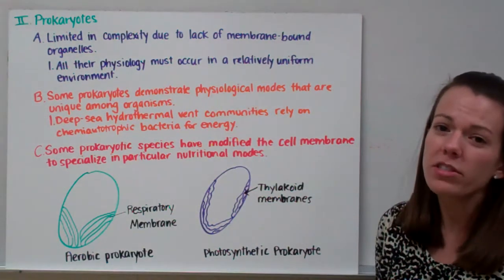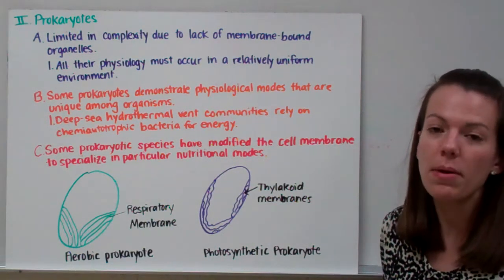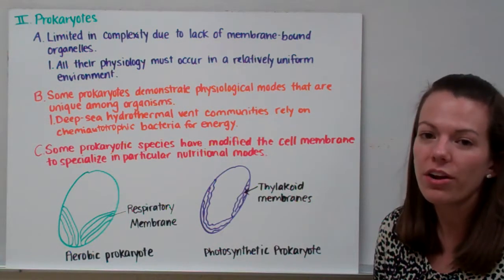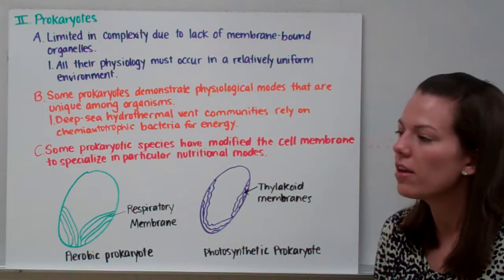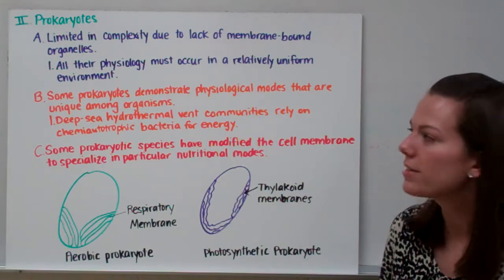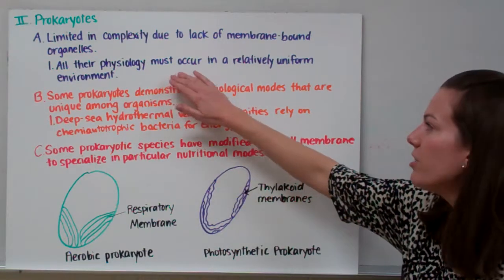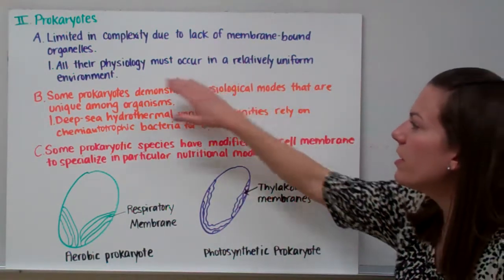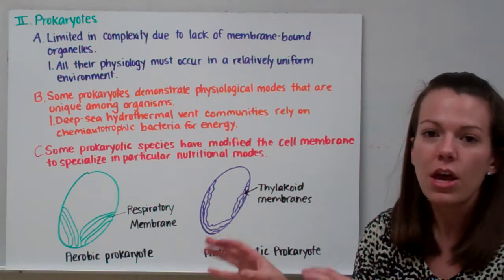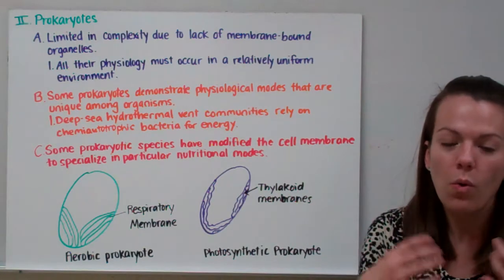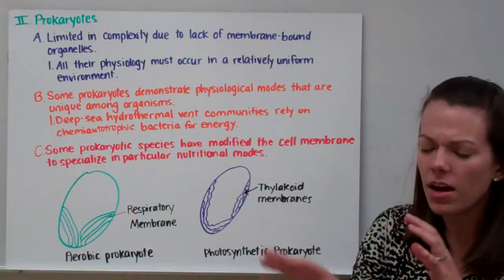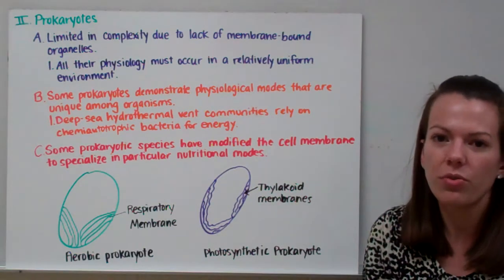Most of the organelles we're familiar with have a membrane on the outside. Ribosomes do not, so prokaryotes do have ribosomes and DNA, but they don't have membrane-bound organelles like mitochondria, chloroplasts, or a nucleus. Therefore, all of their physiology must occur in a relatively uniform environment, since they don't have organelles that can compartmentalize processes like cell respiration or DNA replication.